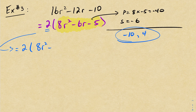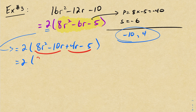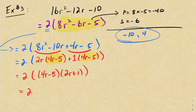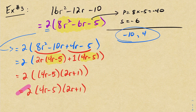GCF-ing out the first two terms gives me 2r with a 4r minus 5 in the brackets. For the next two terms there's nothing to GCF out, so I factor out a 1, leaving me with 4r minus 5 in the brackets. I again have the common factor of 4r minus 5, so I put the 2 down, factor out 4r minus 5, and I'm left with 2r plus 1. The quadratic in fully factored form is 2 times 4r minus 5 times 2r plus 1.